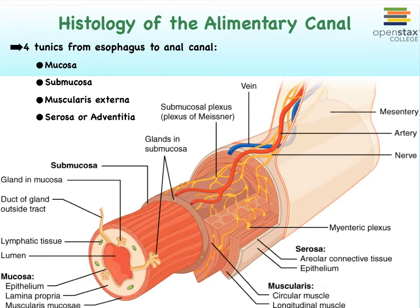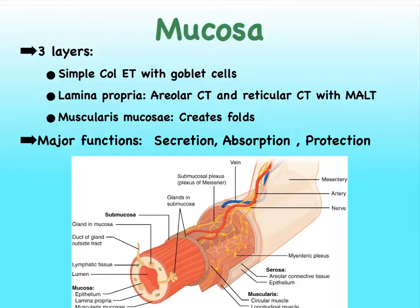Let's point out these four different tunics. Everything in the beige here, plus this reddish layer — which is indeed some smooth muscle — makes up our mucosa. The brownish layer that surrounds the mucosa is the submucosa, which is then followed by a thicker muscular layer referred to as the muscularis externa. And then finally we have our serosa or adventitia, depending on where we are. The mucosa is the layer closest to the lumen — it literally touches the lumen.